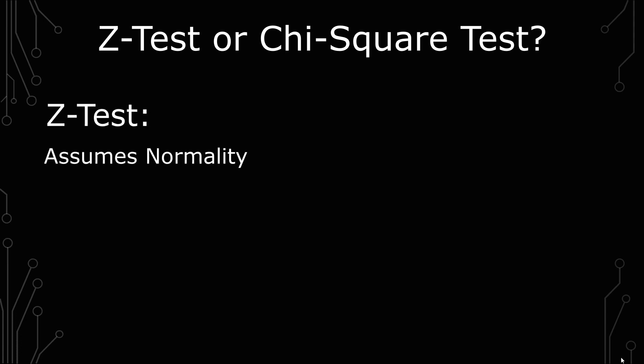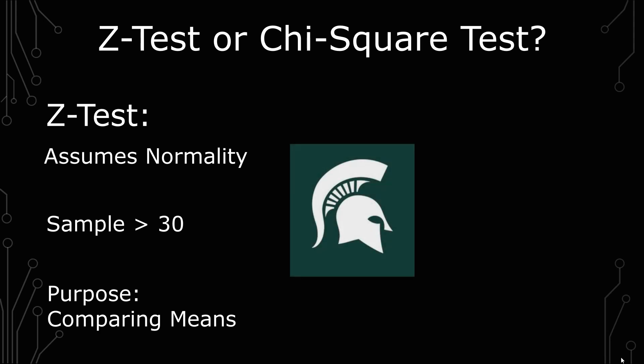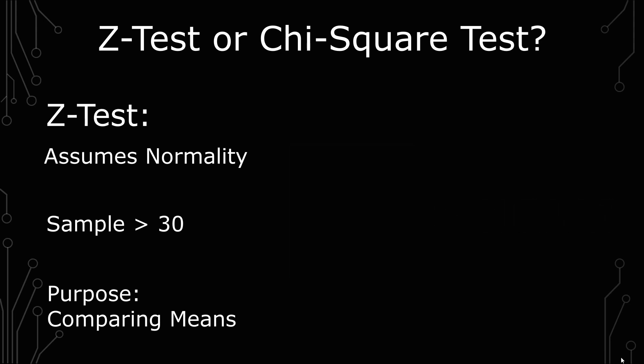The Z-test assumes normality of the data, that the data has a sample greater than 30, and the test itself is a comparison of means. Usually it's a comparison between a sample and a population, or a sample and a gold standard. An example of this is the average height of basketball players on a specific team compared to the average height of all basketball players in the league, and that test is looking to see whether it's significantly higher or lower in relation to each other.